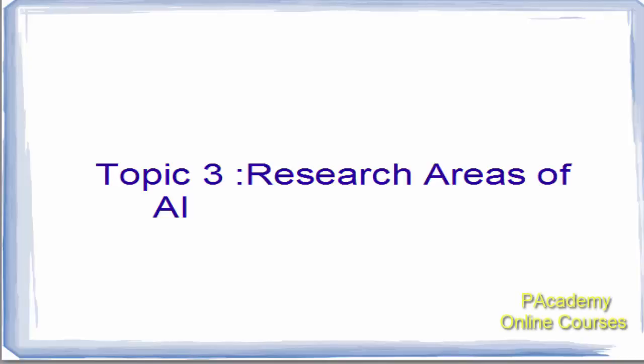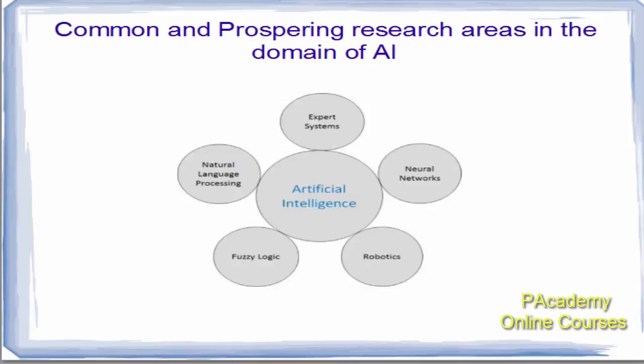Welcome. Our topic is the research areas of AI. The common and prospering research areas in the domain of AI are expert systems, neural networks, robotics, fuzzy logic, and natural language processing. These are the different research areas in which different artificial intelligence systems have been built.